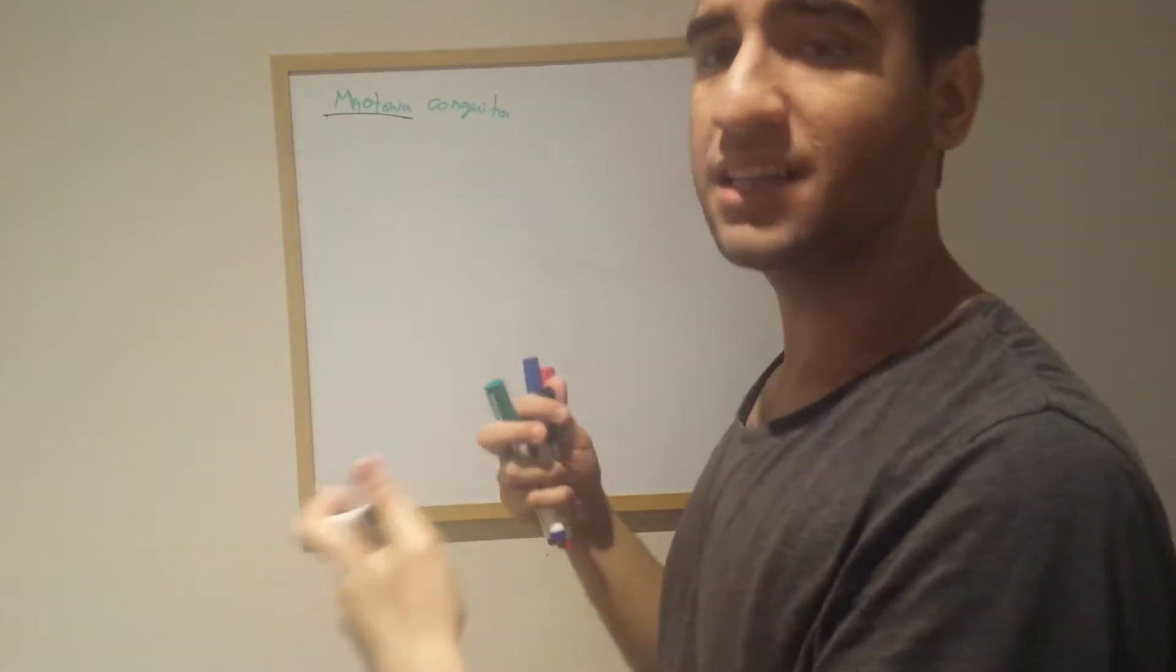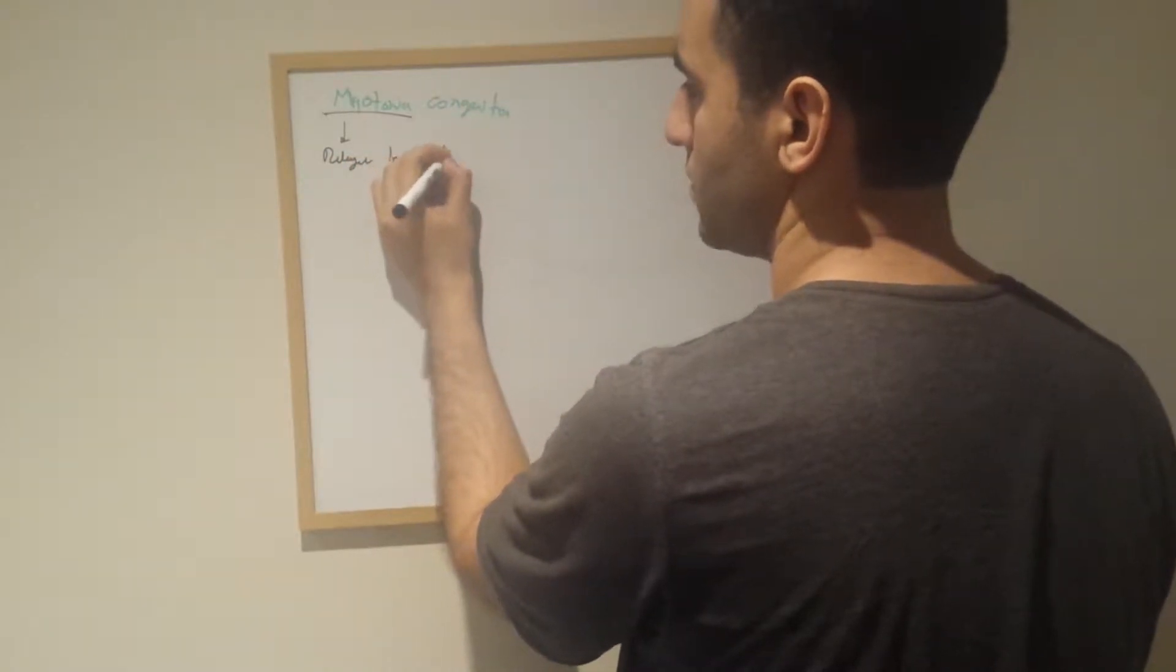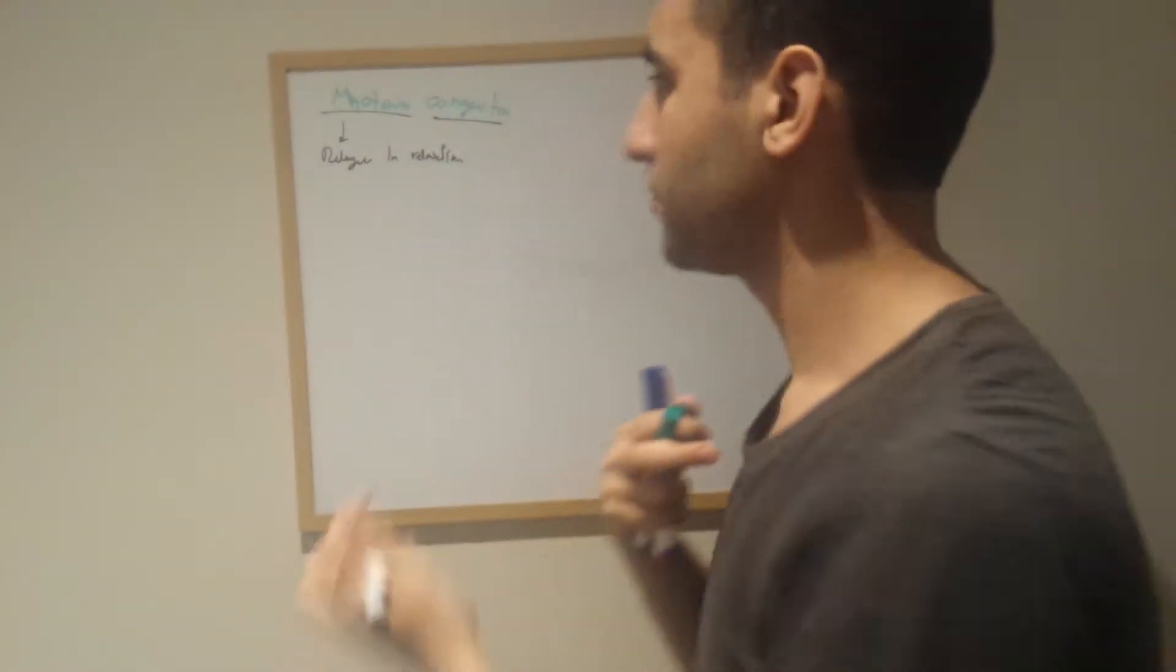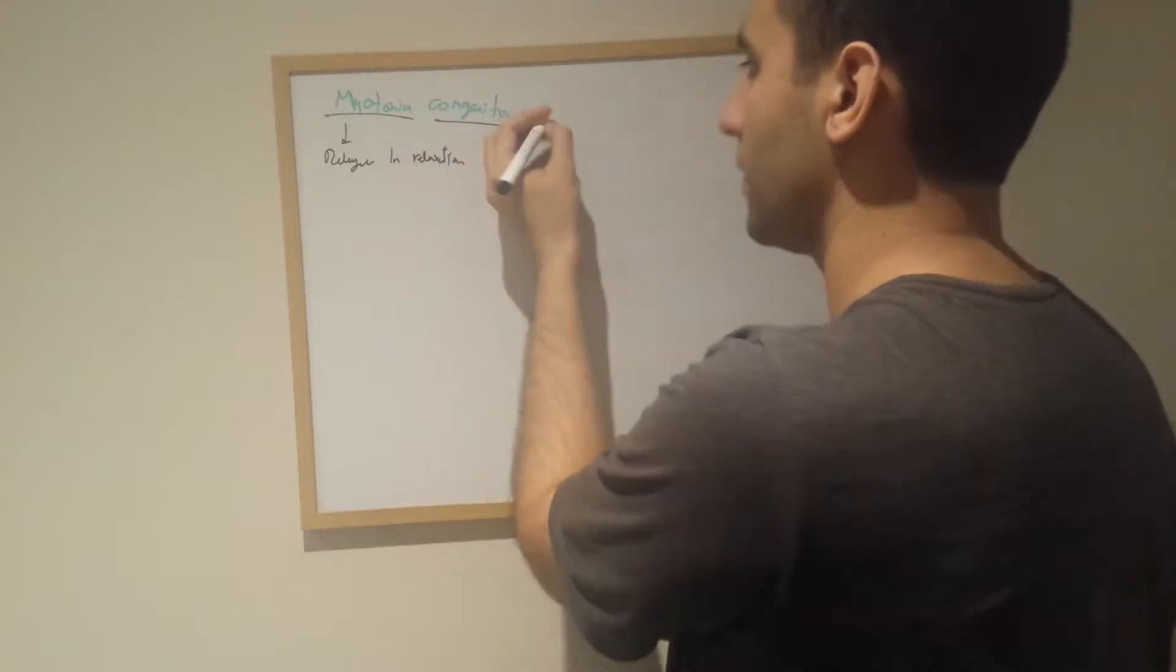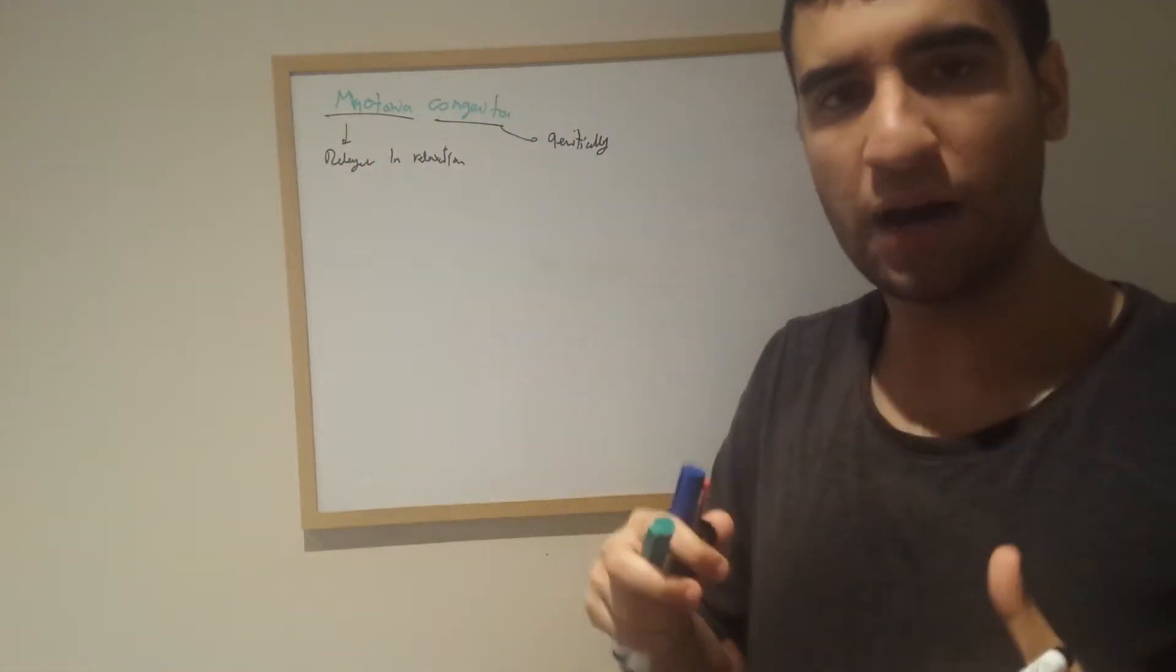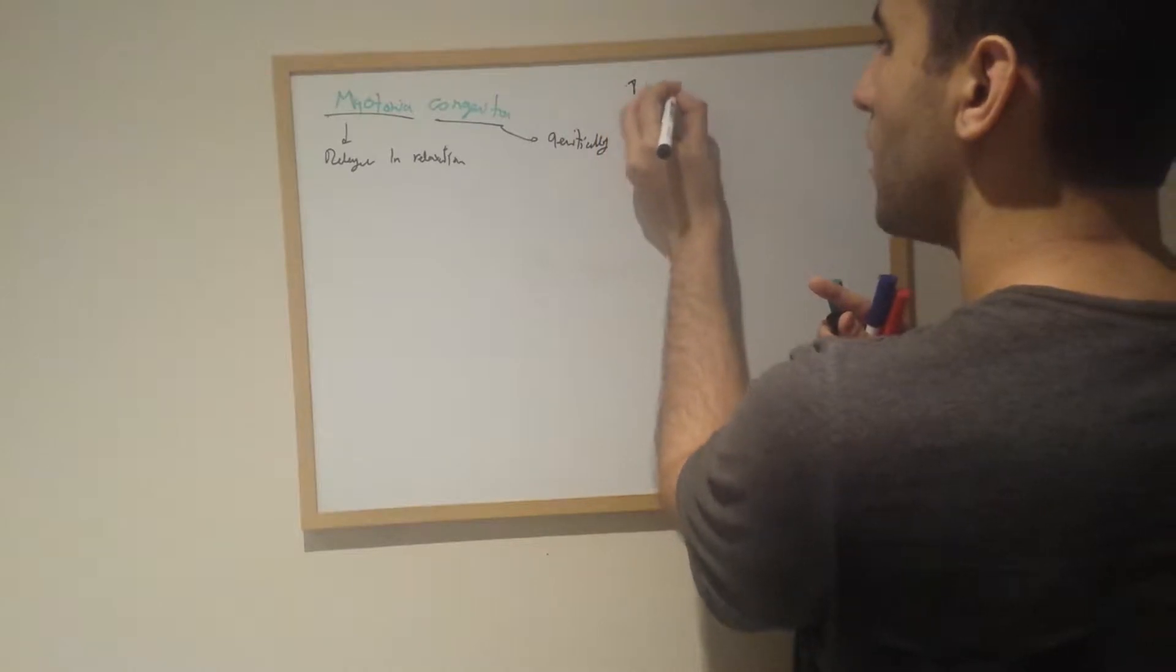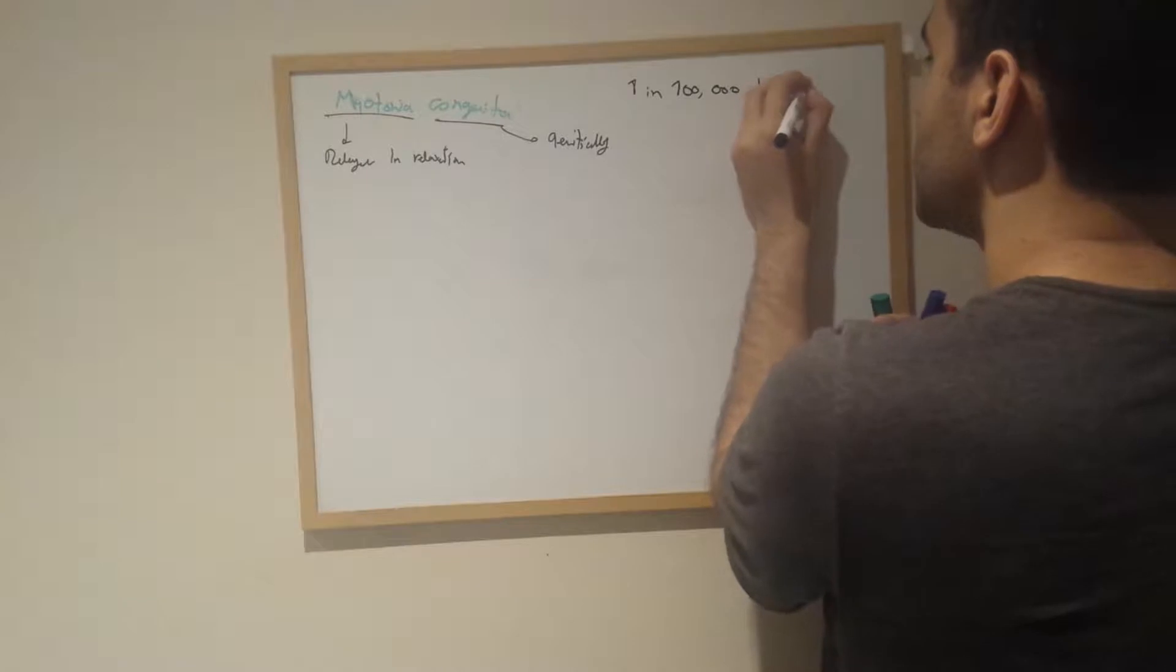Myotonia essentially means delayed relaxation. Congenital essentially means genetic, genetically involved, right from genetic. This disorder is found in about one in 100,000 people, and it is genetically determined.